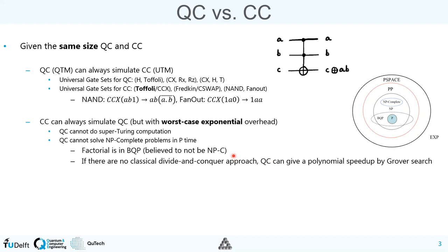One important result is that even with quantum computers, we cannot solve NP-complete problems in polynomial time. NP-complete problems are the hardest problems in the non-deterministic polynomial time class. We know from Shor's algorithm that factorization can be sped up on a quantum computer. This is evidence that factorization may not lie in the NP-complete class — most people believe it lies in NP but is neither polynomial time nor NP-complete.